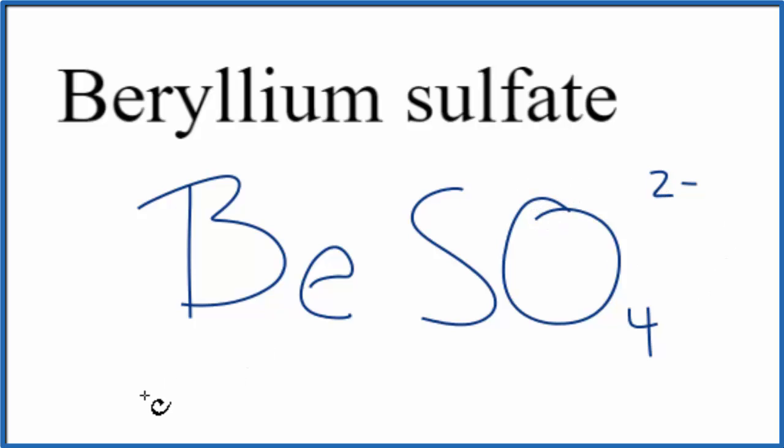So because we have this metal and this group of nonmetals, this polyatomic ion here, this is an ionic compound. We have to balance the charge. Beryllium on the periodic table, that's in group 2. It'll have a 2-plus ionic charge. This sulfate, this whole sulfate here, is 2-.